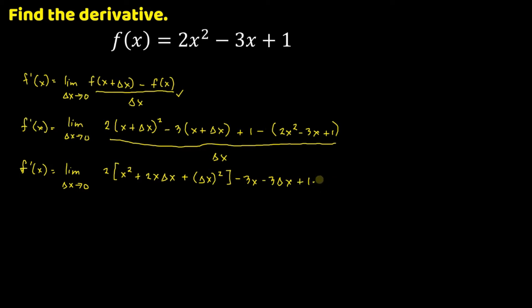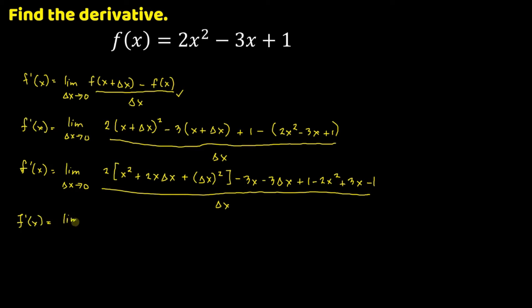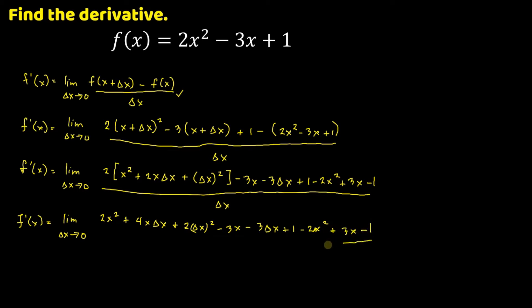Then negative times 2x squared is negative 2x squared. Negative times negative 3x is positive 3x. And negative times 1 is negative 1, all over delta x. So distribute 2: 2 times x squared is 2x squared, 2 times 2x delta x is 4x delta x. Then minus 3x, minus 3 delta x, plus 1, minus 2x squared, plus 3x, minus 1, all over delta x. So combine similar terms.